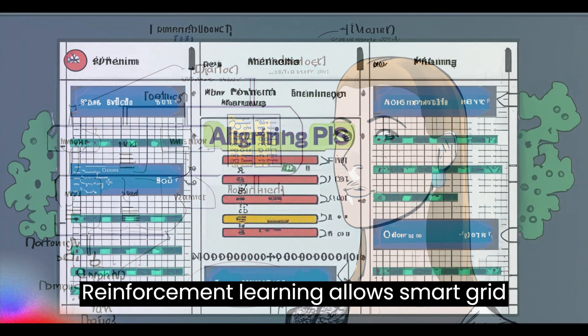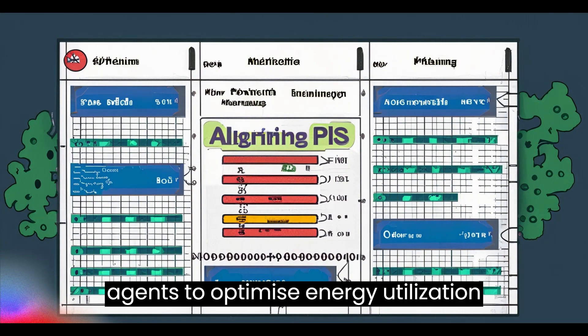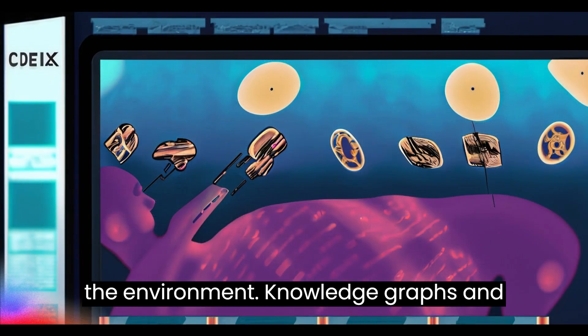Reinforcement learning allows smart grid agents to optimize energy utilization through trial and error interactions with the environment.